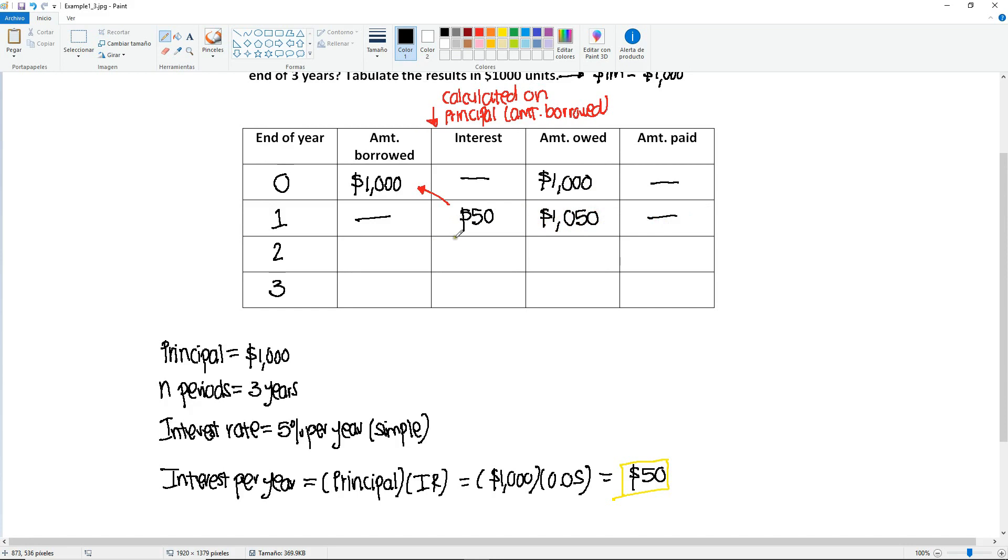Now we go to year two, no borrowing here. We are accumulating more interest, but remember that the interest continues to be calculated over the same amount. So we do not need to rewrite the formula that we have, it's still the principal, the $1,000 times the interest rate, so we continue to have a $50 calculation of the interest. So now, how much do they owe? They owed $1,050 plus the $50 that they are accumulating this year, making it $1,100. And no payment is needed yet.